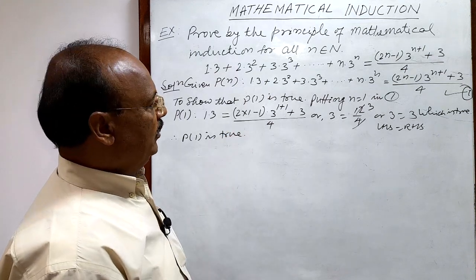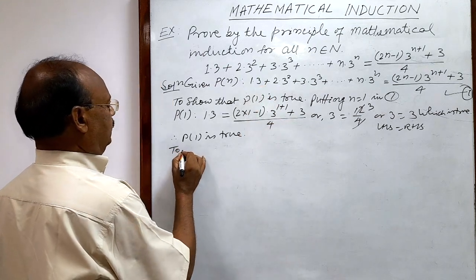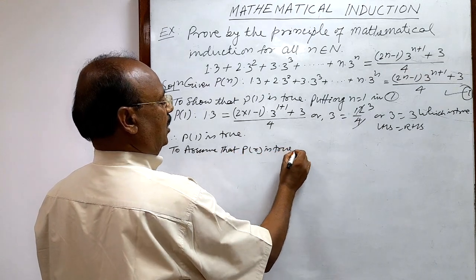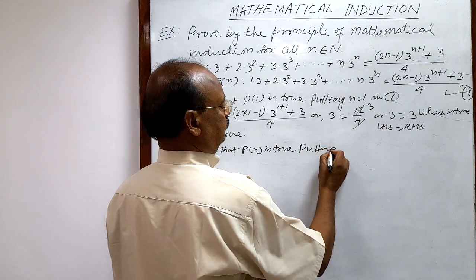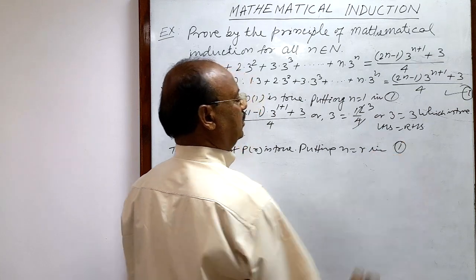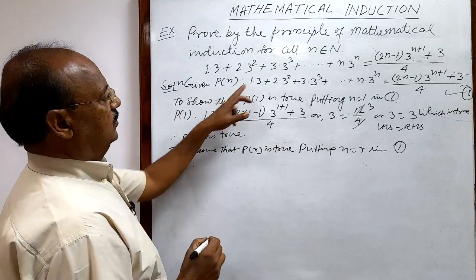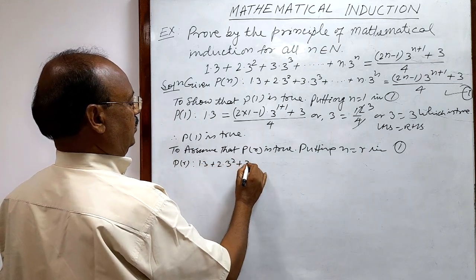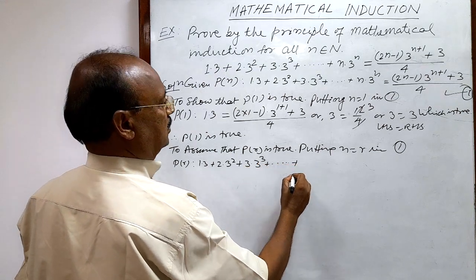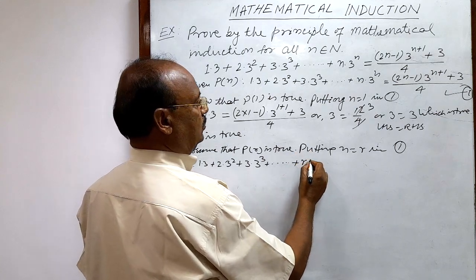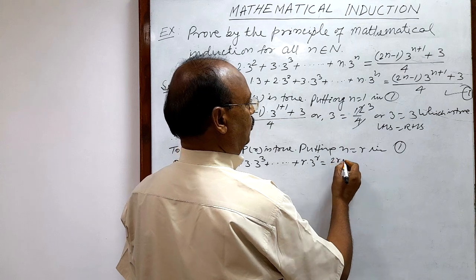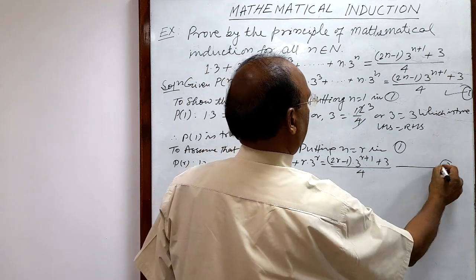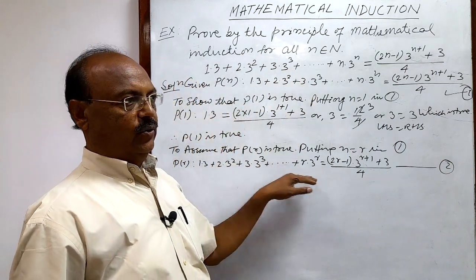Second step: we assume that P(R) is true. We get P(R) by putting n = R in relation number 1. So P(R) is: 1·3 + 2·3² + 3·3³ + ... + R·3^R = (2R−1)·3^(R+1) + 3 divided by 4. Let us call this relation number 2. We are assuming this expression holds true.